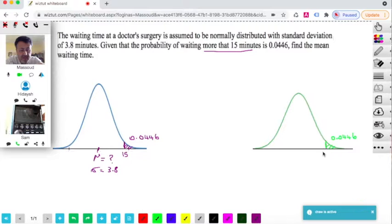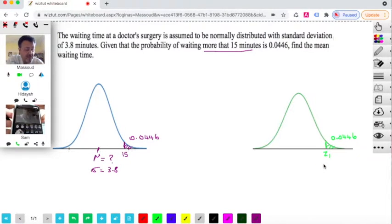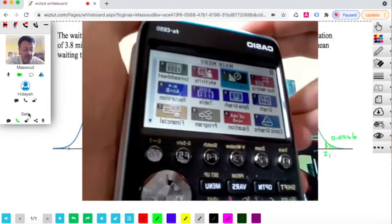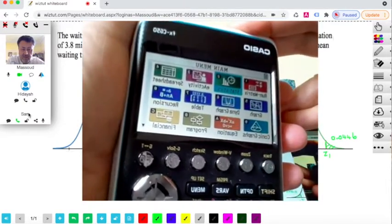And I will be finding this Z1 of the Z distribution. So we're going to be using the calculator here. I have used my tablet to see if I can actually show you my calculator.